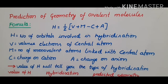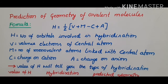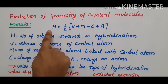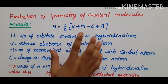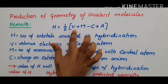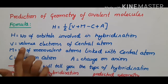Today's topic is prediction of geometry of covalent molecules. Whether the covalent molecule is a neutral molecule, a cation, or an anion, you can predict the geometry using this formula: H = ½(V + M - C + A).